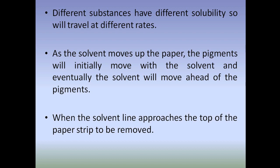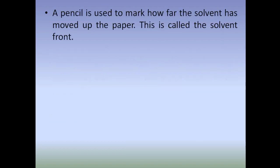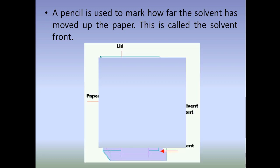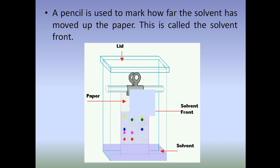When the solvent line approaches the top of the paper strip, the strip is to be removed. A pencil is used to mark how far the solvent has moved up the paper — this is called the solvent front. The solvent has moved ahead of the substances, and the separated pigments appear as dots on the paper.